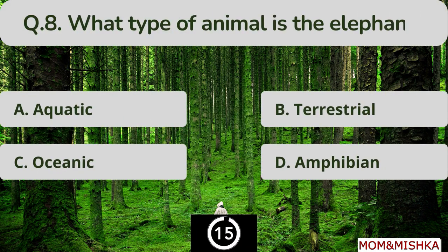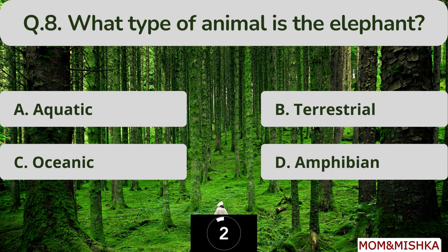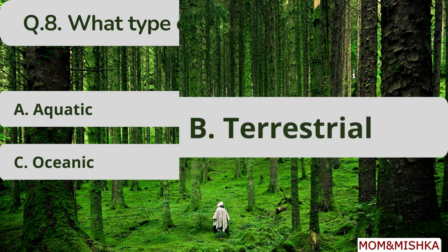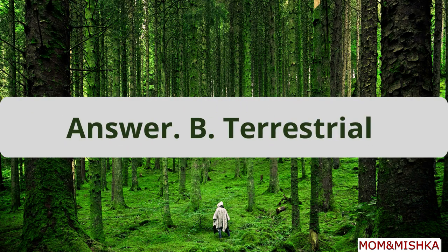What type of animal is the elephant? It's a terrestrial animal. Option C.